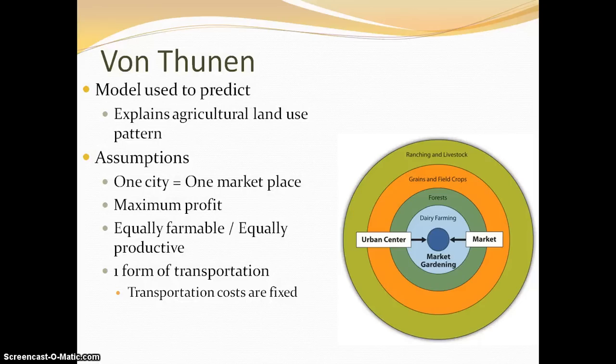So today we're going to talk about what's called von Thunen's model. Von Thunen's model is named after the German geographer Heinrich von Thunen, and basically what he's looking to do is theorize, understand, and describe why specific agricultural practices are located where they are in relationship to the city center — the market area.